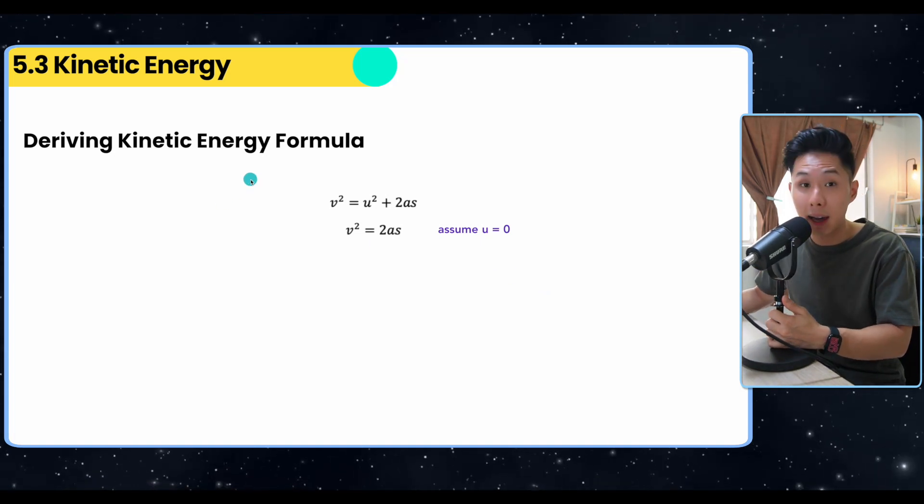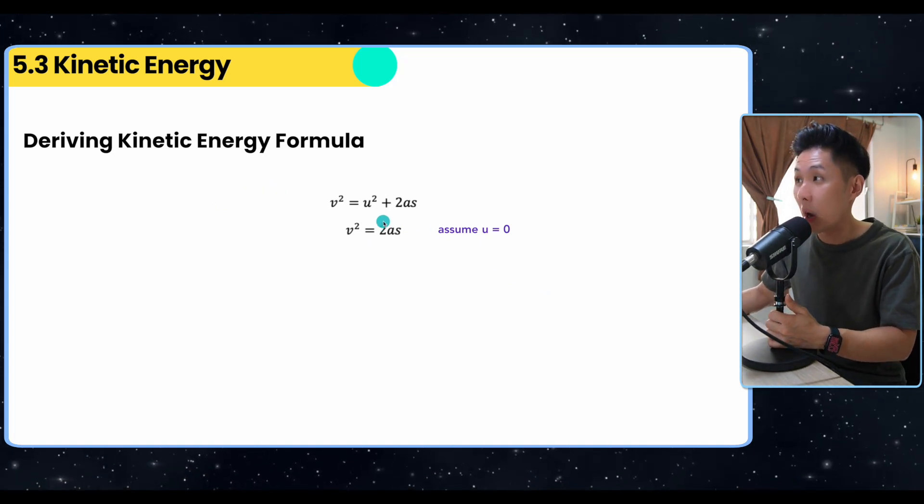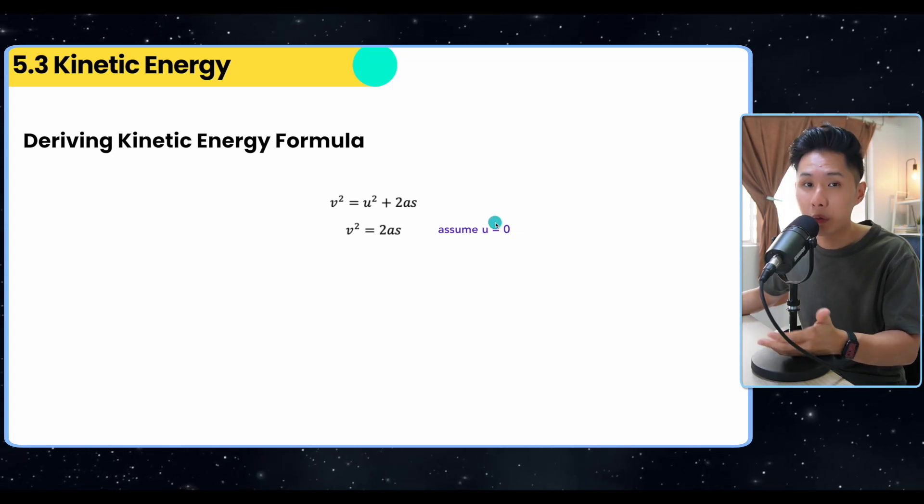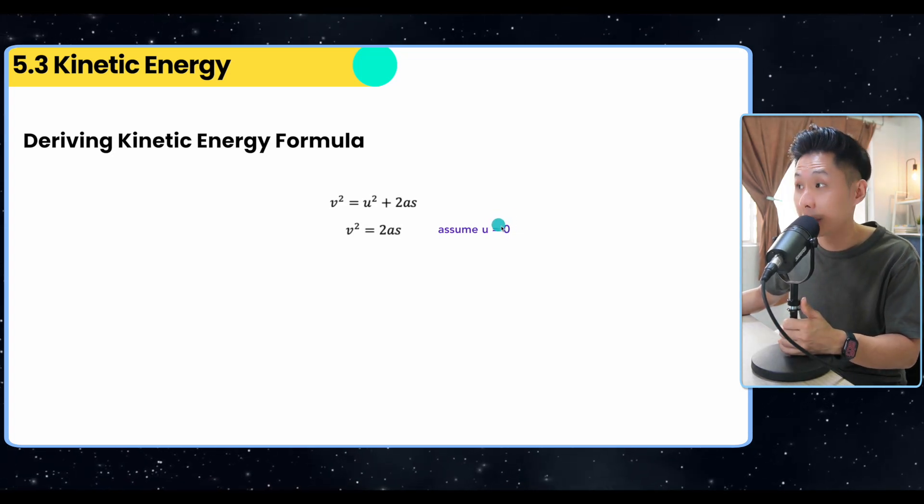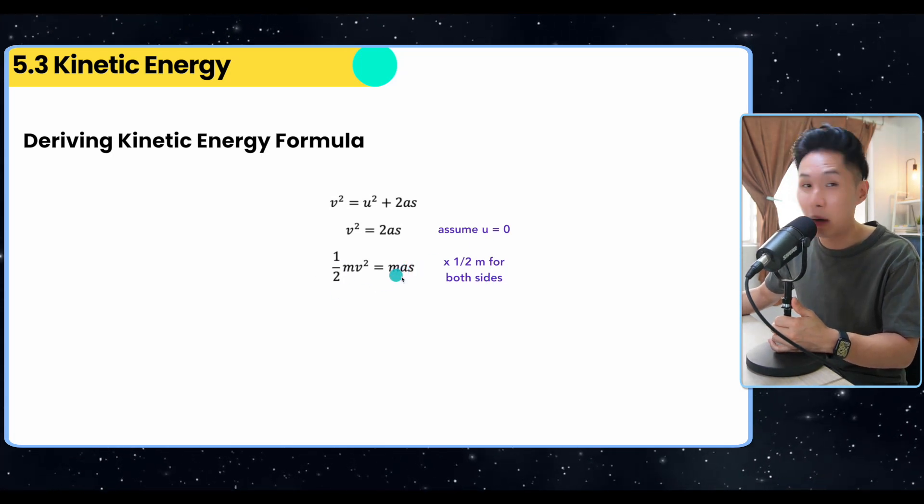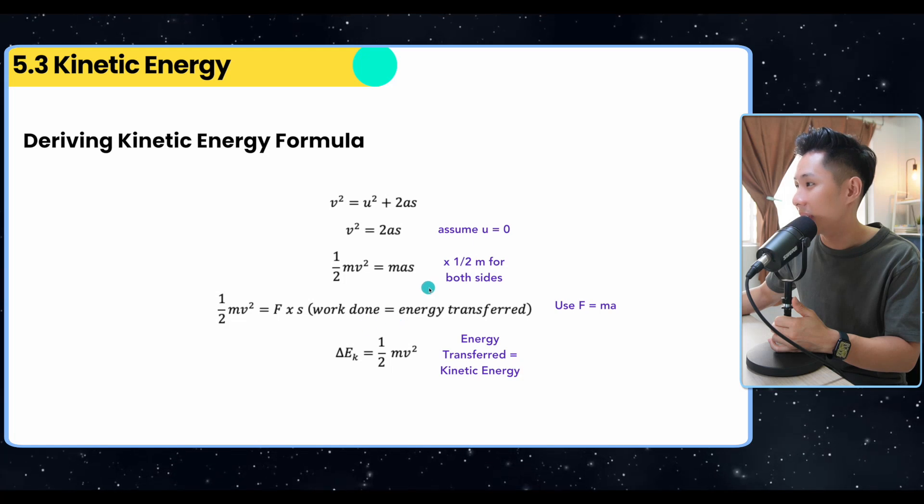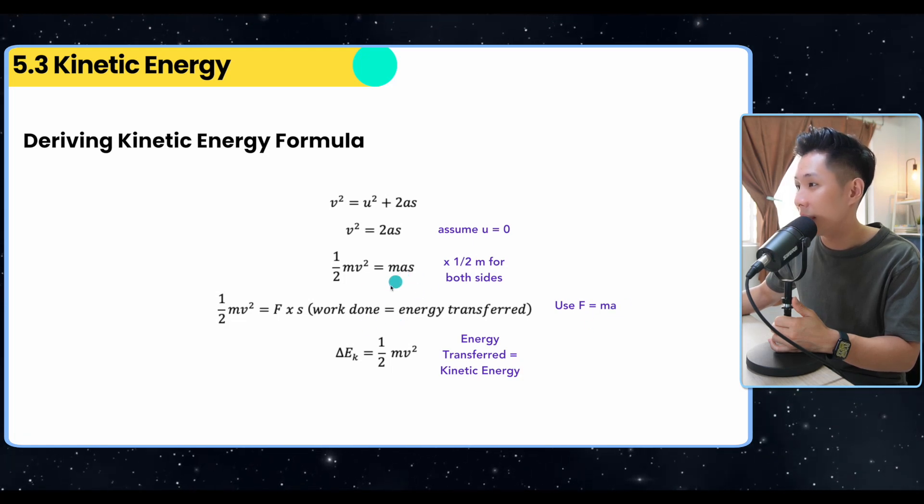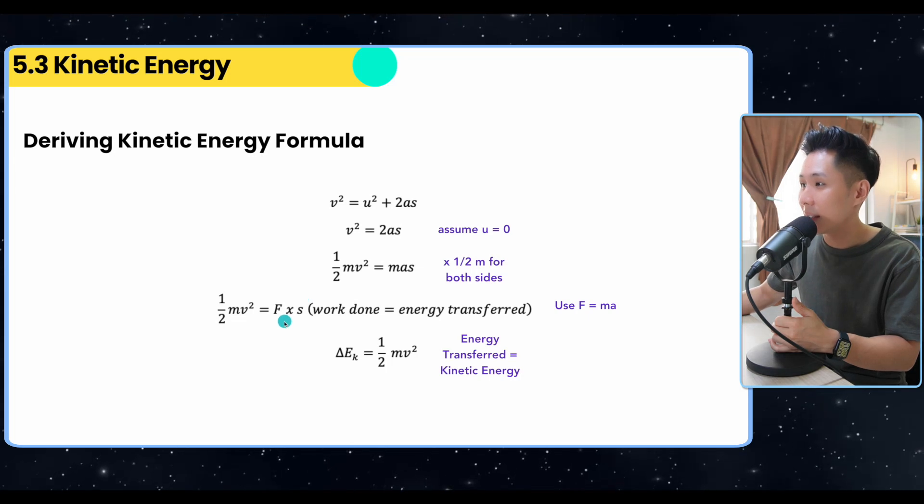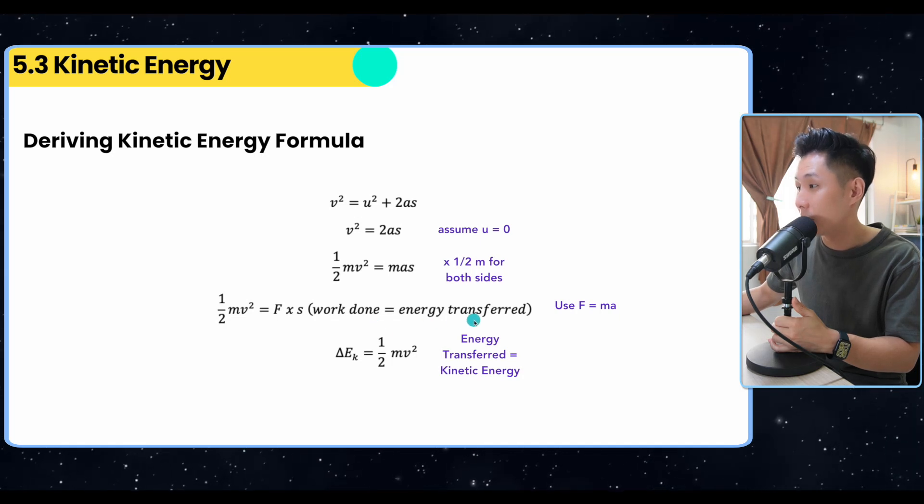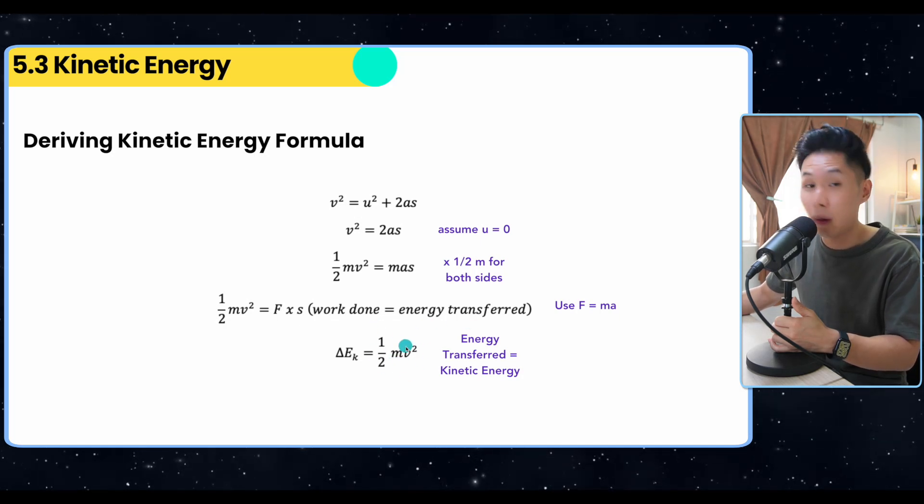So how do we derive the kinetic energy formula? We can derive it from one of the equations of motion. Assume that U is zero because we just want to calculate the increase in kinetic energy. And then we'll multiply half m for two sides. I'll explain why I did that later. And then because we know that F is equal to ma, we can substitute this ma with F. So you will see that we have the work done formula here, F times S. So that's the energy transport. And that's how we say that this is the kinetic energy formula.